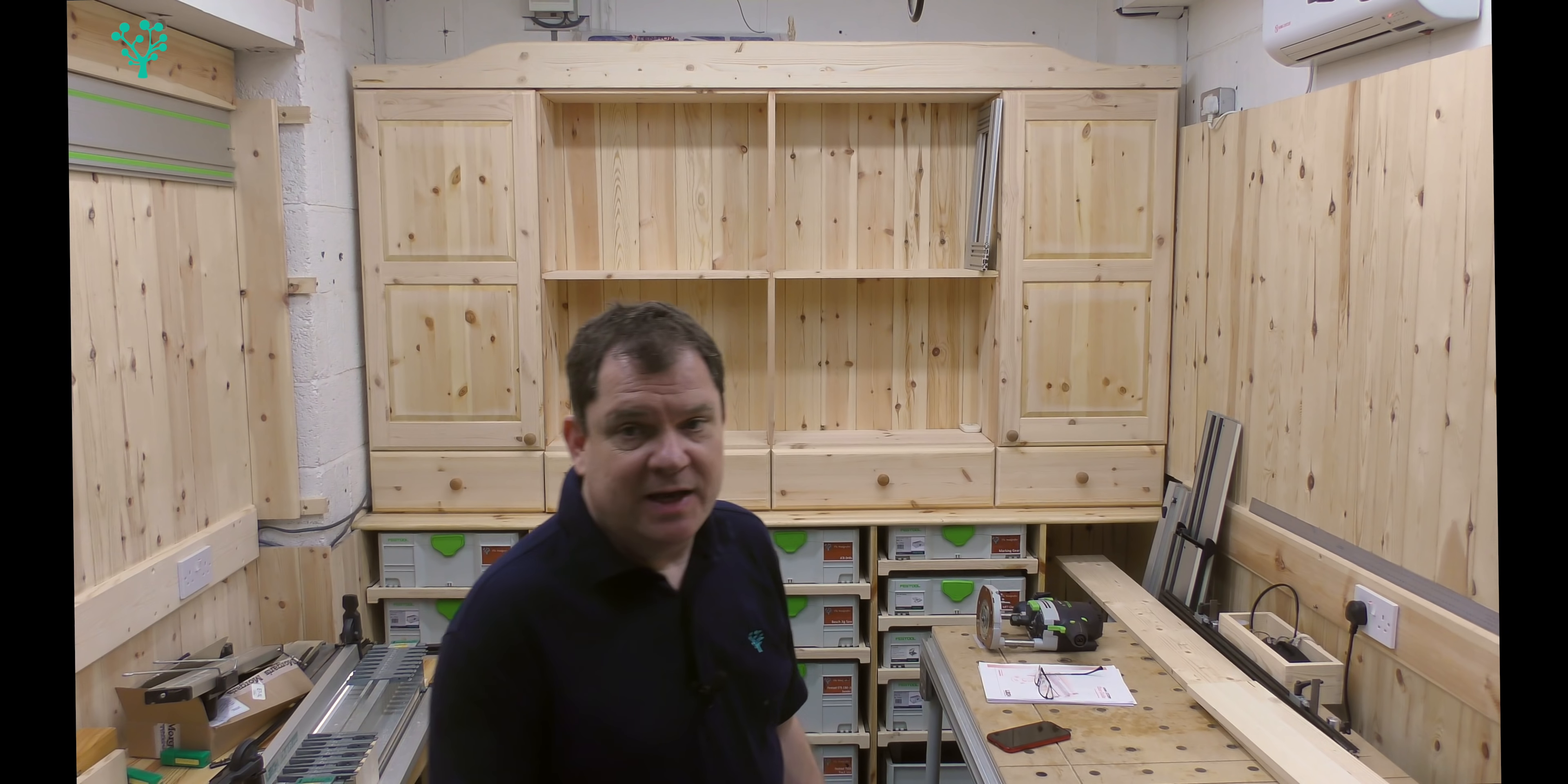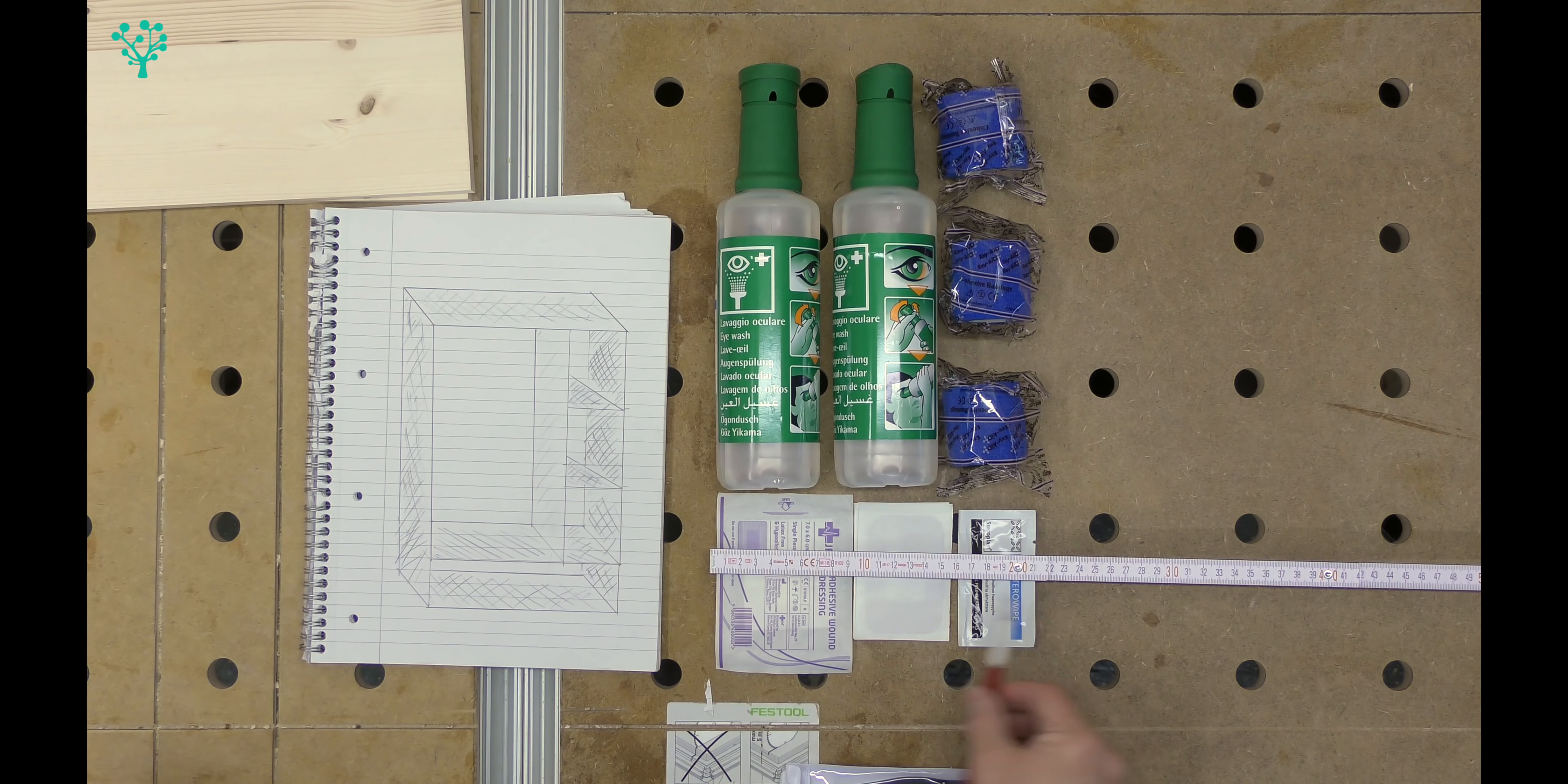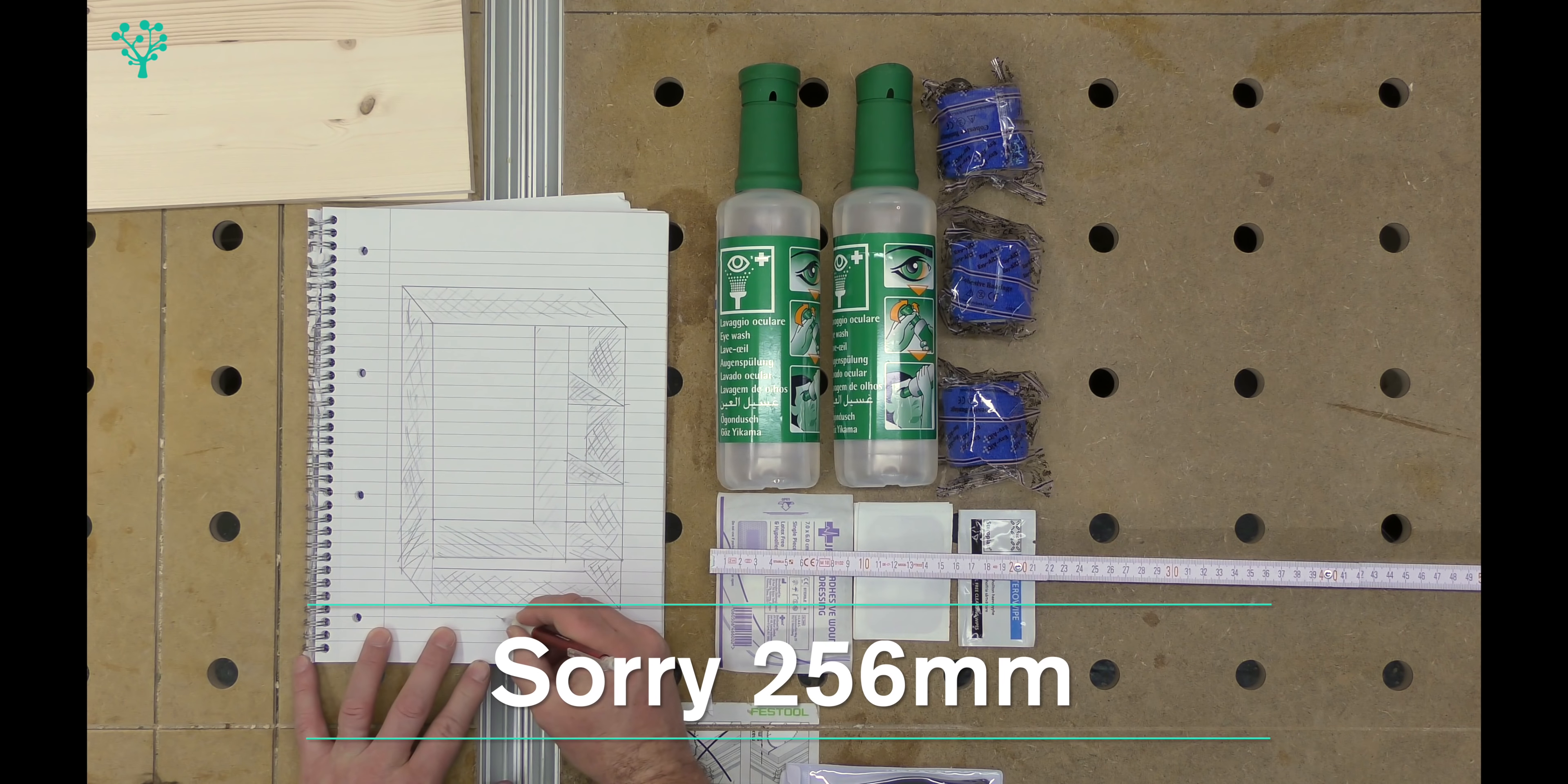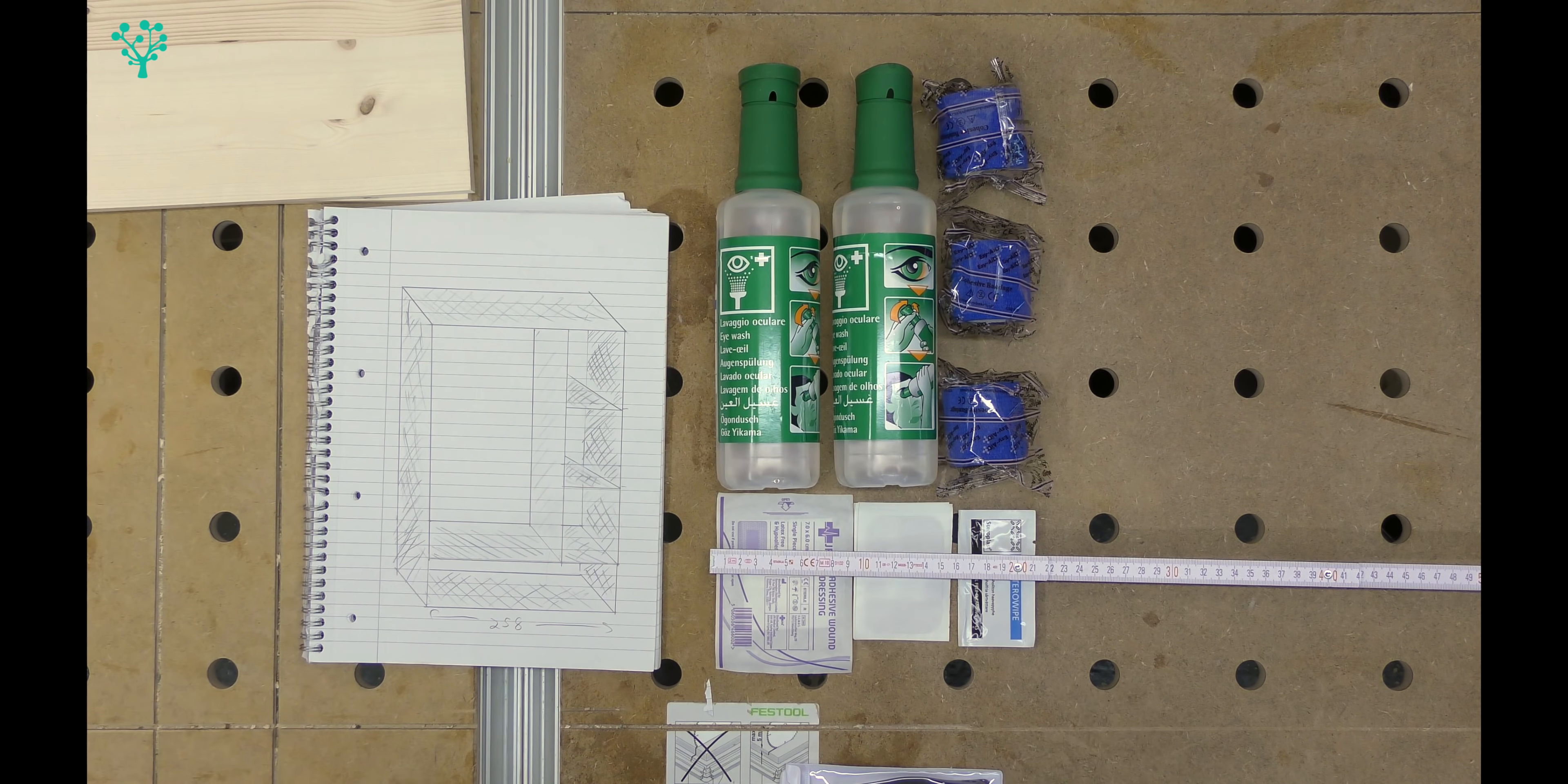I'm using 18mm pine. That's scrap material that I've got around the shop from when we did the bookcase build. That's obviously over-engineered for this job, but while we've got it, we'll use it. So 18mm on either side is 36.